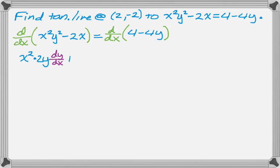So that's first, derivative of the second, and then plus second, which is y squared, derivative of the first is 2x. And then the derivative of, so that was the derivative of that whole thing there, that's just the product rule. And then derivative of negative 2x is negative 2. That's the left-hand side.